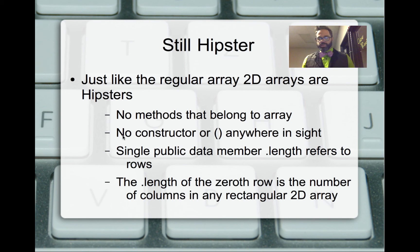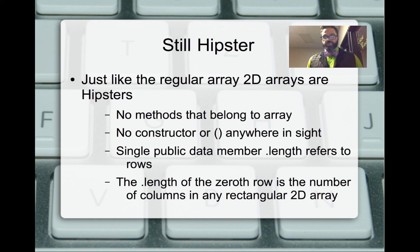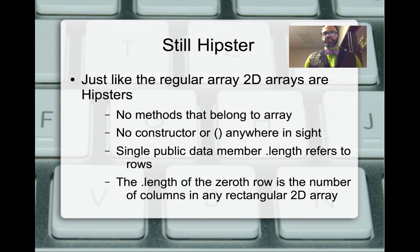Arrays are still 'hipster' — 2D arrays are also hipster — so there are no methods that belong just to the array class, no constructors. A single data member, dot length, refers to the number of rows. If we want the number of columns, we go to the dot length of the zeroth row — sub zero dot length — and grab the number of columns for the 2D array.